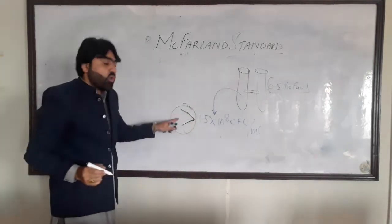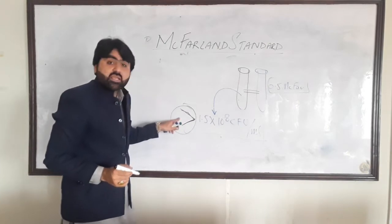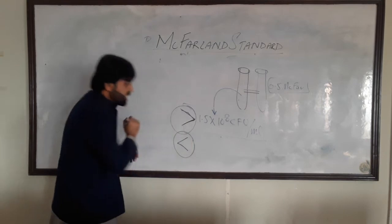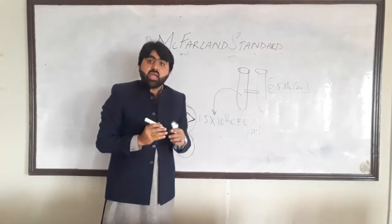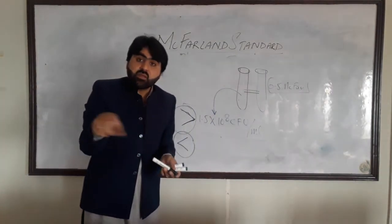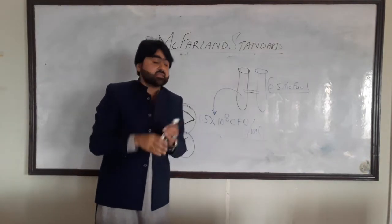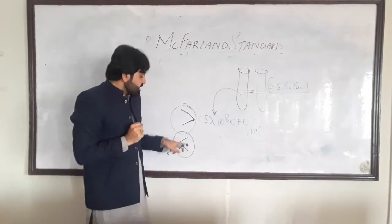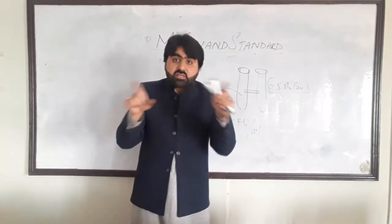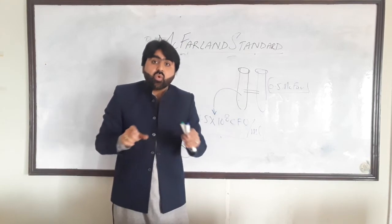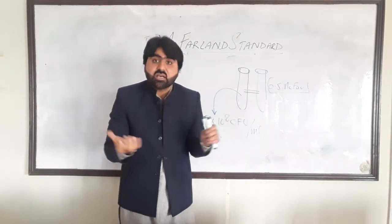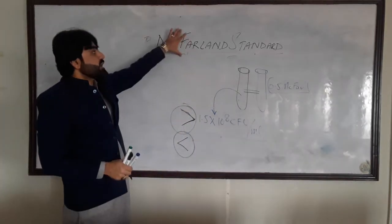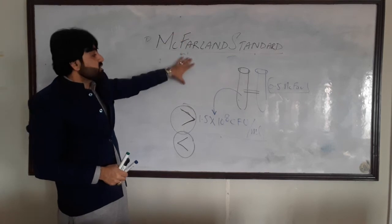Conversely, if you are putting fewer cells in the bacterial suspension and you spread it on the surface of Mueller-Hinton agar, it will result in false sensitivity, because the lesser number of bacterial cells on the surface of the Mueller-Hinton agar will be easily inhibited by the antibiotic disc. Therefore, McFarland standard is very important in bacteriology to adjust or calibrate the turbidity and density of bacterial cells in a suspension.